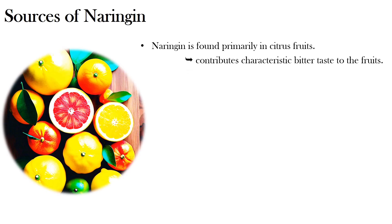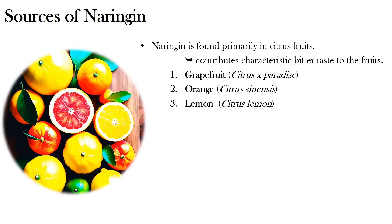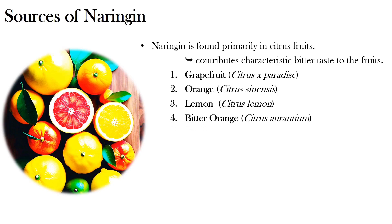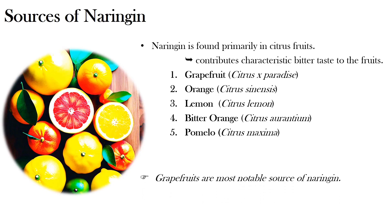The common sources of Naringenin include grapefruit (botanical name: Citrus paradisi), orange (Citrus sinensis), lemon (Citrus limon), bitter orange (Citrus aurantium), and pomelo (Citrus maxima). The point to be noted is that grapefruits are the most notable source of Naringenin.